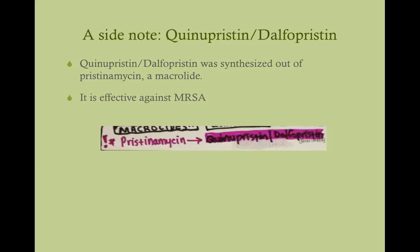Quinupristin-dalfopristin is derived from pristinomycin, which is a macrolide. It was found that two byproducts of pristinomycin, used together, are effective against MRSA. So quinupristin-dalfopristin is one drug synthesized out of pristinomycin, and it is effective against MRSA — making it an anti-MRSA drug.